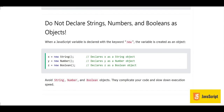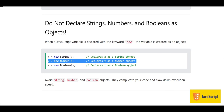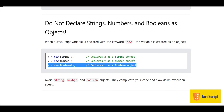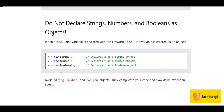To wrap up, do not declare strings, numbers, and booleans as objects. When a JavaScript variable is declared with the 'new' keyword, the variable is created as an object. For example, 'new String' declares x as a string object, 'new Number' declares y as a number object, and 'new Boolean' declares z as a boolean object. Avoid these because they complicate your code and slow down execution speed. Whenever you define a number or string, define them without the 'new' keyword.